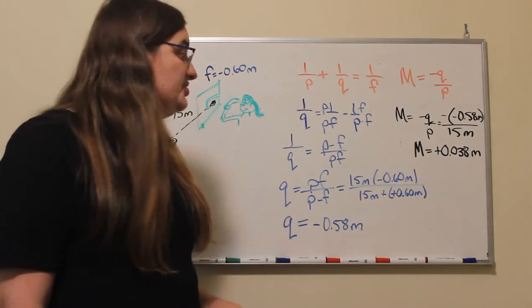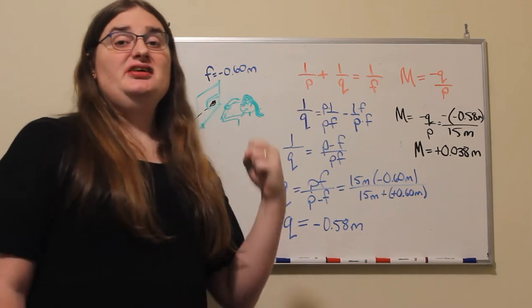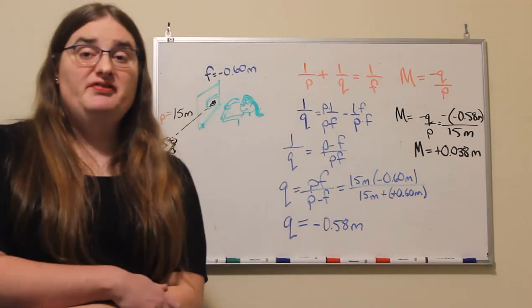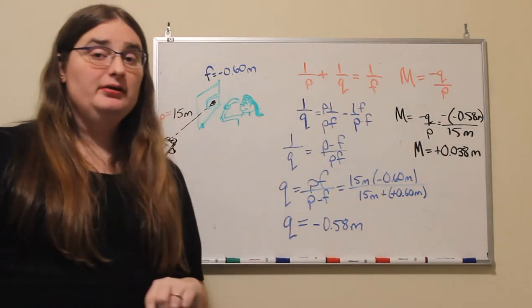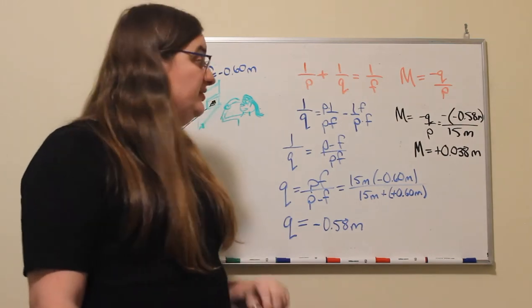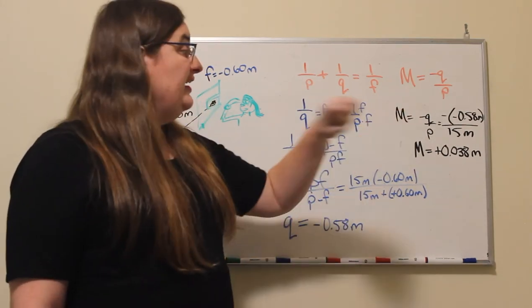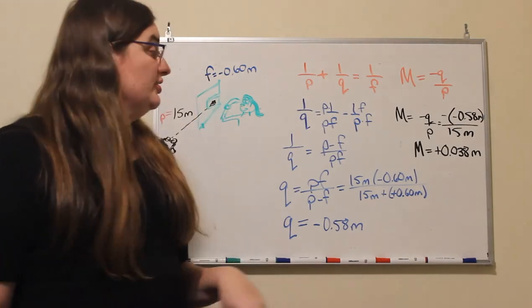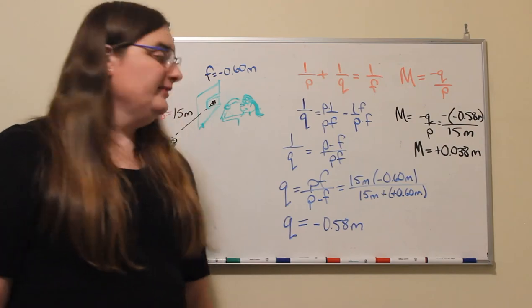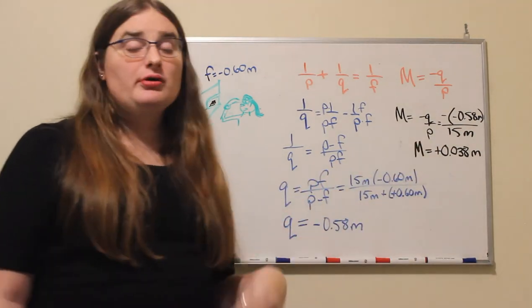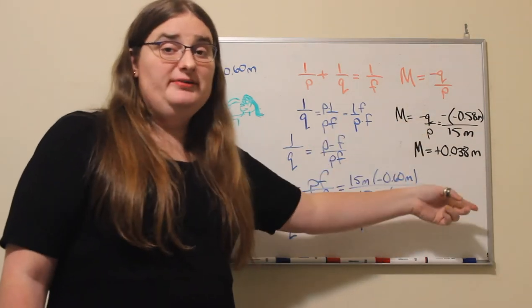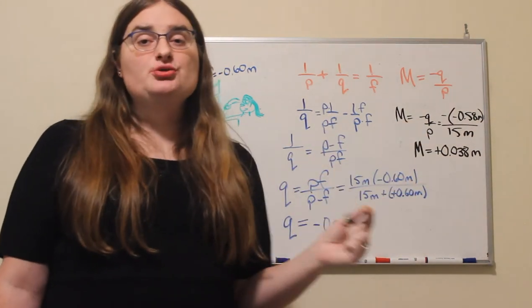Now for my magnification, since I know my image distance and I know my object distance, my magnification in terms of image and object distances is minus q over p. So I have minus negative 0.58 meters divided by 15 meters. So that means my magnification is positive, so my image is upright, 0.038. And because my magnification factor is less than one, our image is reduced in size.